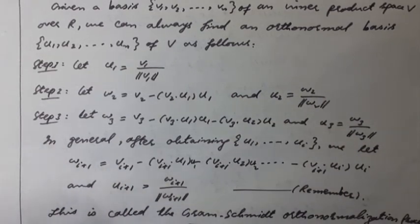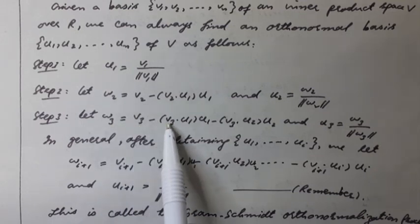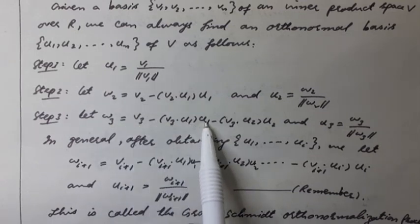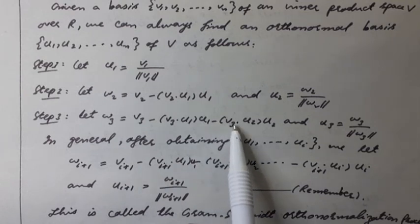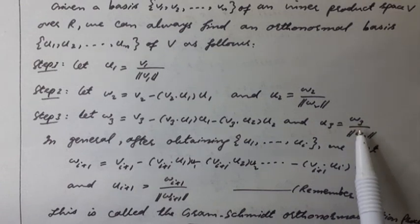Step 3: Let W3 is equal to V3 minus the inner product of V3 with U1 times U1 minus the inner product of V3 with U2 times U2, and U3 is equal to W3 over the norm of W3.